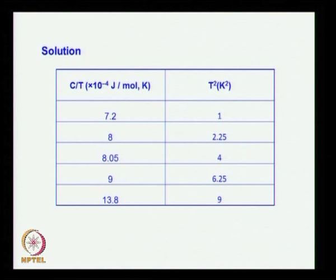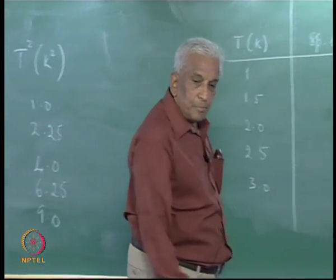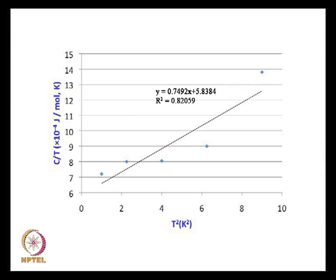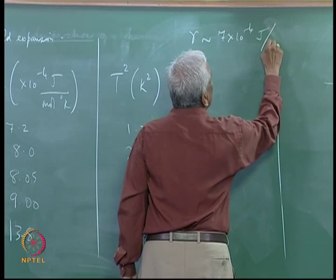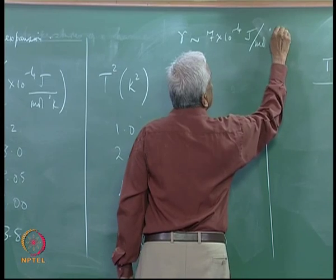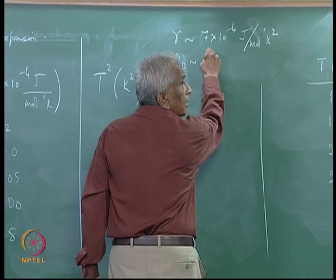Using the given data, we construct the table and plot C/T versus T^2, which turns out to be an approximate straight line at low temperatures. Passing a straight line through these points, we get the slope and intercept, giving γ ≈ 7 × 10^{-4} J/mol·K^2 and the Debye temperature approximately 150 Kelvin.